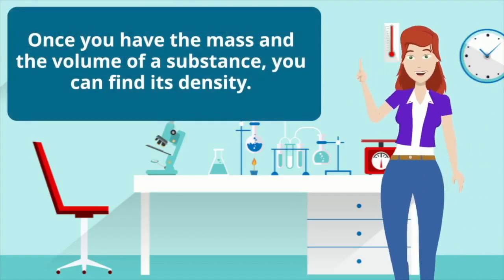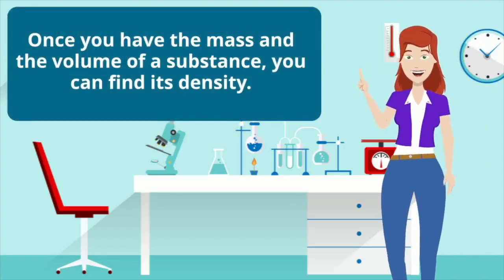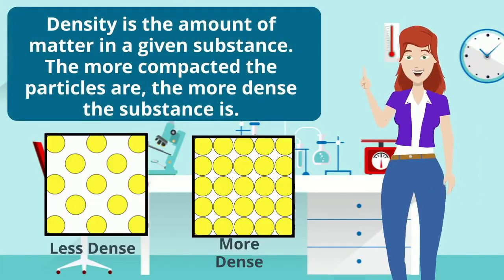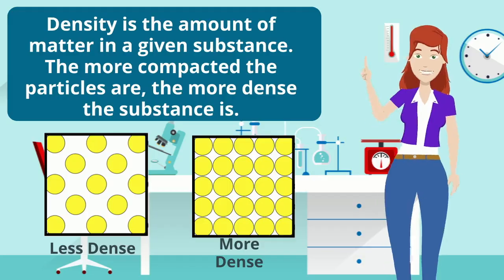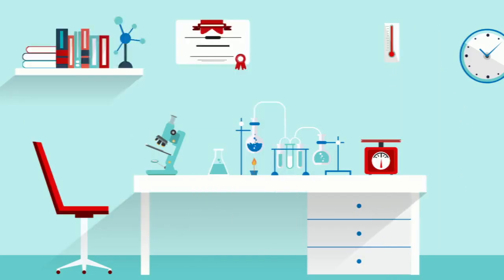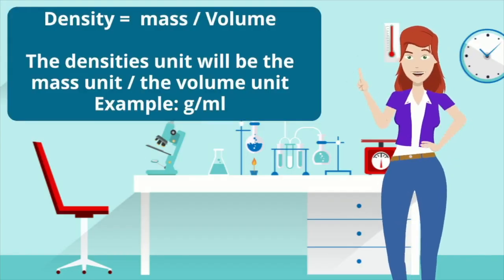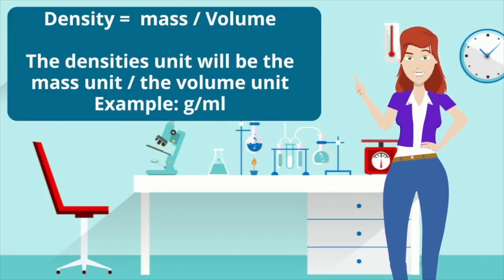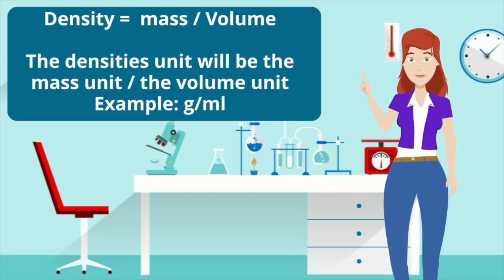Once you have the mass and the volume of a substance, you can find its density. Density is the amount of matter in a given substance. The more compacted the particles are, the more dense the substance is. Density equals mass divided by volume. The density's unit will be the mass unit over the volume unit — for example, grams per milliliter.